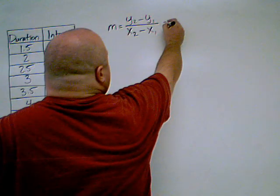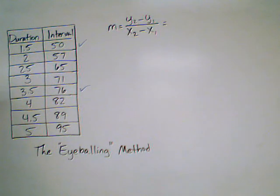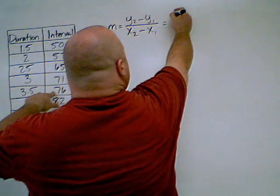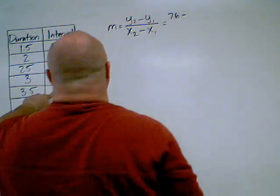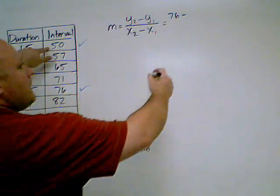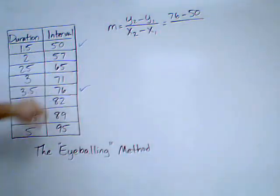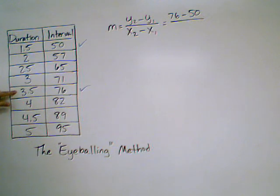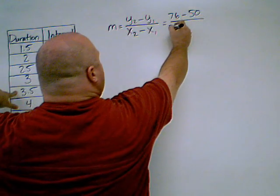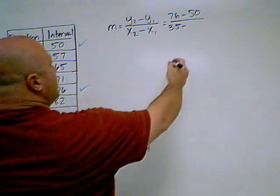All we're going to do is plug in. Since this is our second point, we're going to use that for x2 and y2. So y2 comes first. 76 minus 50. On the bottom, we're going to have 3.5 minus 1.5.